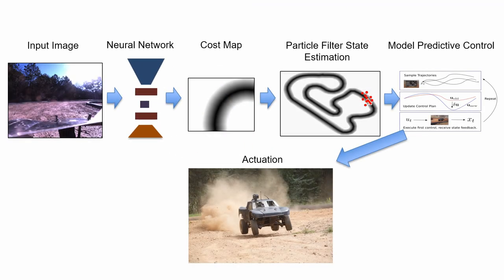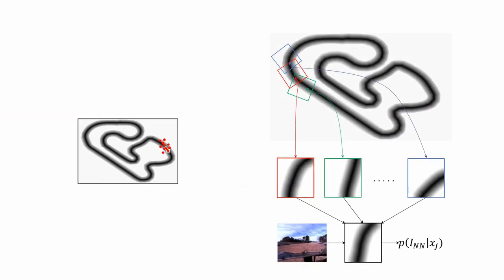This dynamic observation model is then fed into a particle filter. The particle filter uses IMU measurements, wheel speeds, and cost map predictions to estimate the vehicle state. This is then fed to a model predictive controller.